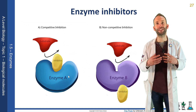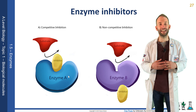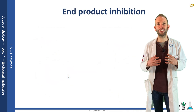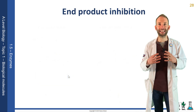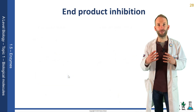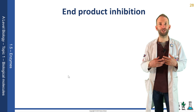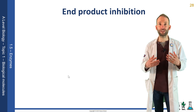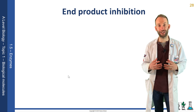Now sometimes you want a reaction to happen but you want to regulate it. This is called end product inhibition — it's a really clever way of self-regulating a reaction. There's a great example with ATP and respiration.